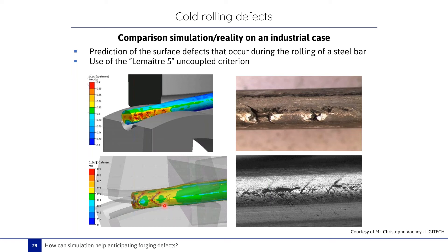In another case, we have another type of defect that appears on the surface — similar to the chevron defect, but this time appearing on the surface. To detect it, EGUTEC uses the Lemaître uncoupled criteria.